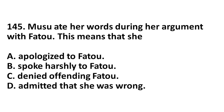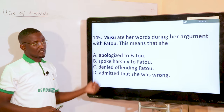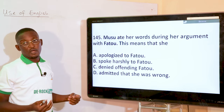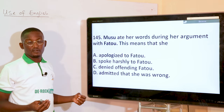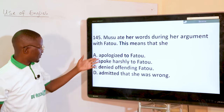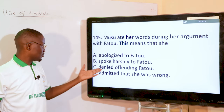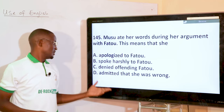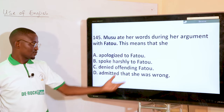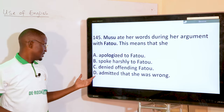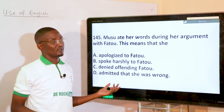Musou ate her words during her argument with Fatou. What does it mean to eat your words? That is to admit that you are actually wrong. Options: apologize to Fatou, spoke to Fatou, denied offending Fatou, admitted that she was wrong. She admitted that she was wrong — that means she ate her words.